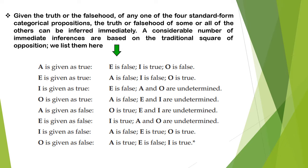Now what will happen if I is true? If I is true, then E will be false because the relationship is that of contradictory. But the relationship between A and I is that of subalternation — you cannot move from I to A, that is from particular to universal. So if I is true, A is undetermined. Similarly, the relationship between I and O will also be undetermined, meaning you are not very sure about their truth value.